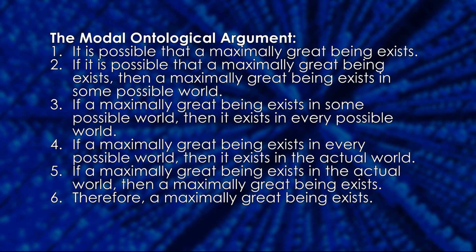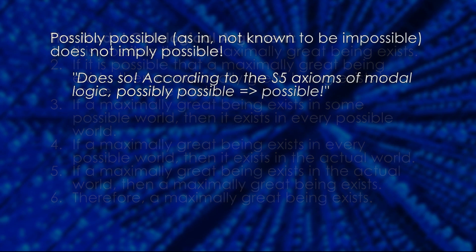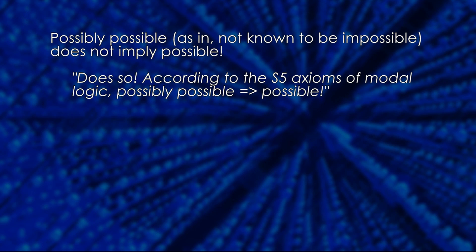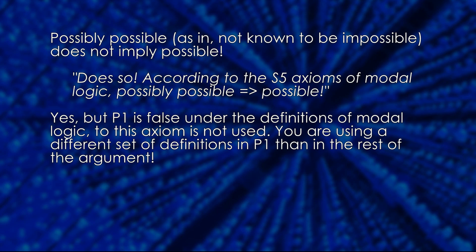I have previously mentioned how possibly possible — as in not known to be impossible — does not really mean possible, and used this to refute the modal ontological argument. The defense against this is to state that premise 1, just like the rest of the argument, uses the S5 axioms of modal logic, one of which is that possibly possible implies possible. That's true, but only using the definitions of modal logic, and not known to be impossible is not the definition of possible in modal logic. Using this defense only leads to an equivocation fallacy, because if we grant premise 1, we are definitely not using the definitions of modal logic, which the rest of the argument relies on.